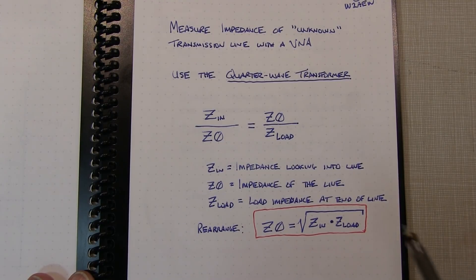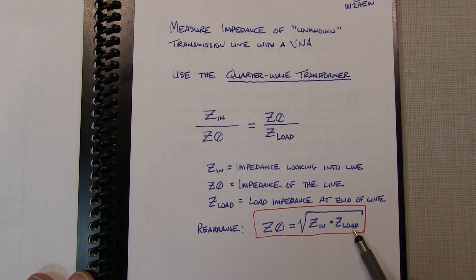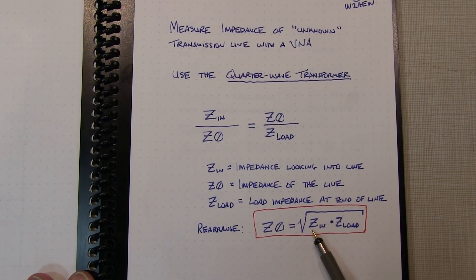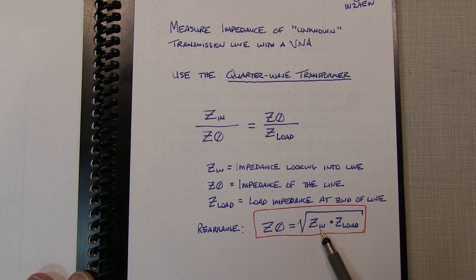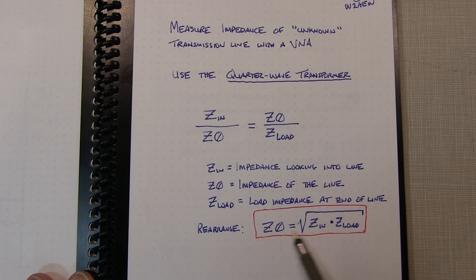What we'll do to make it easy on ourselves is we'll make the load 50 ohms, and then we just need to look at a quarter-wavelength away to see what that resistance looks like, and then compute that impedance.